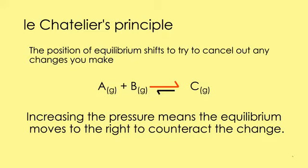Pressure only affects equilibrium when we've got gases involved. If there are no gases, then pressure is not going to affect it. In this case, I've got more moles of gas on the left-hand side — two moles of gas on the left and only one mole on the right. So if I increase the pressure, it will try to reduce the pressure by having fewer moles of gas, meaning the position of equilibrium will shift to the right.